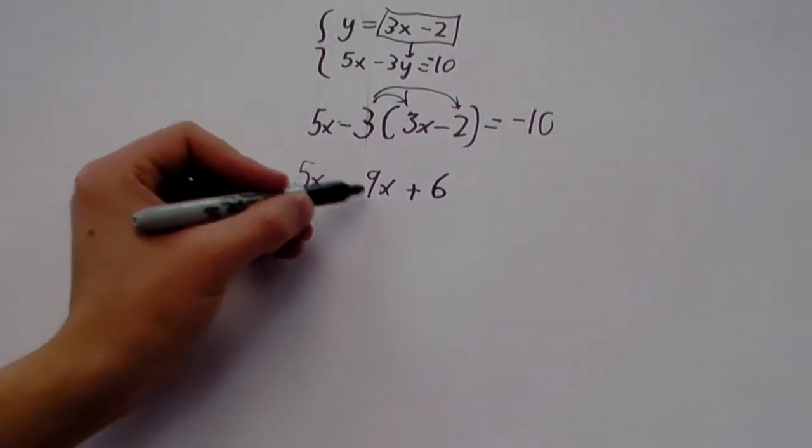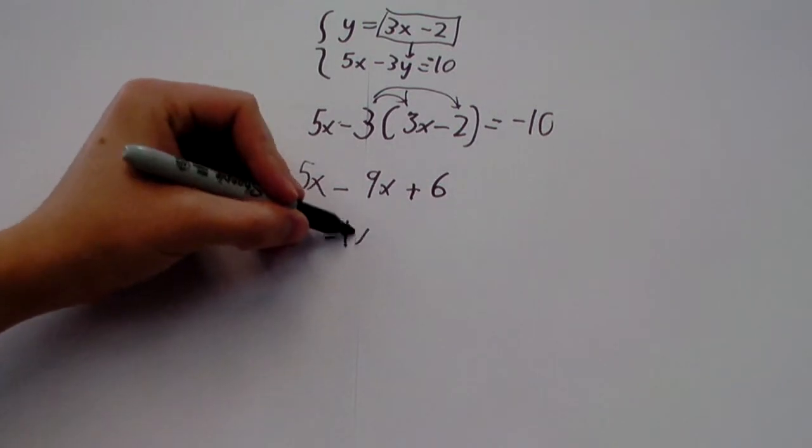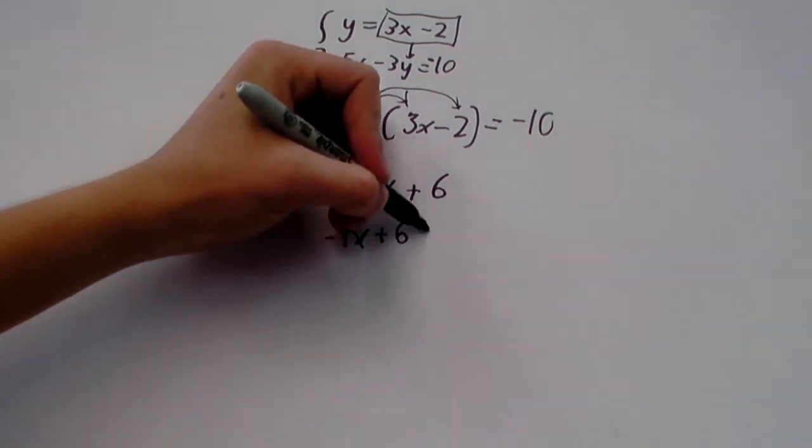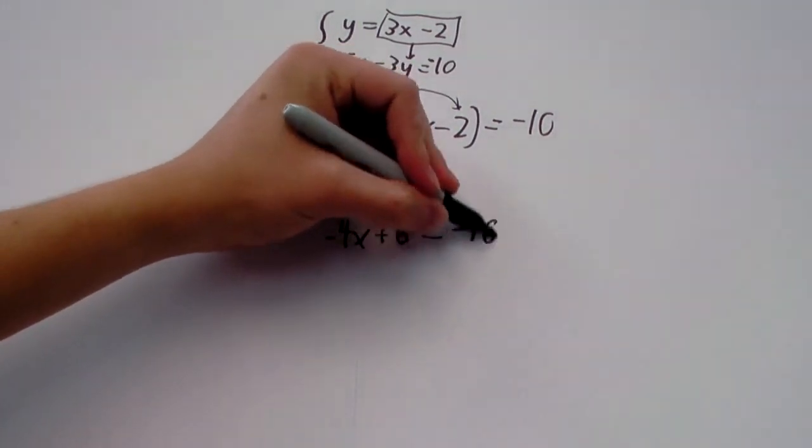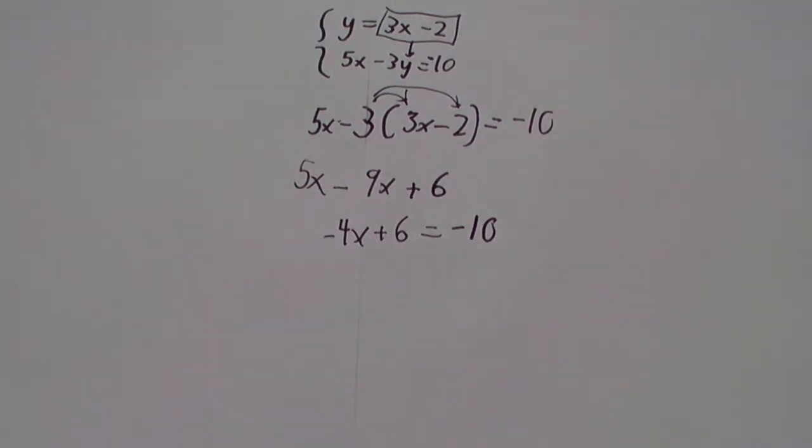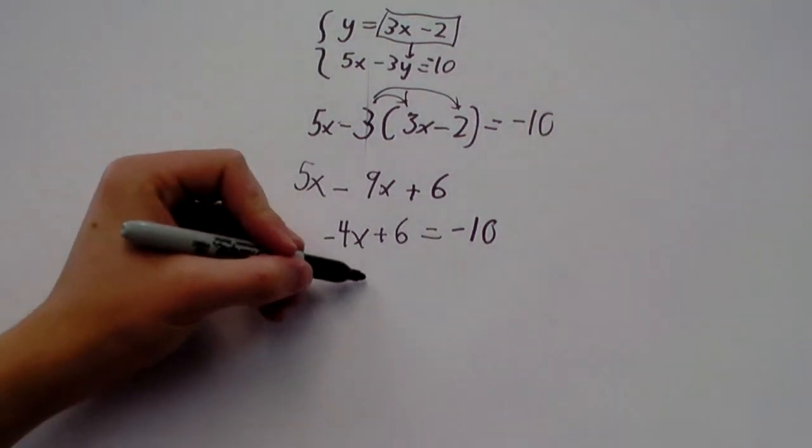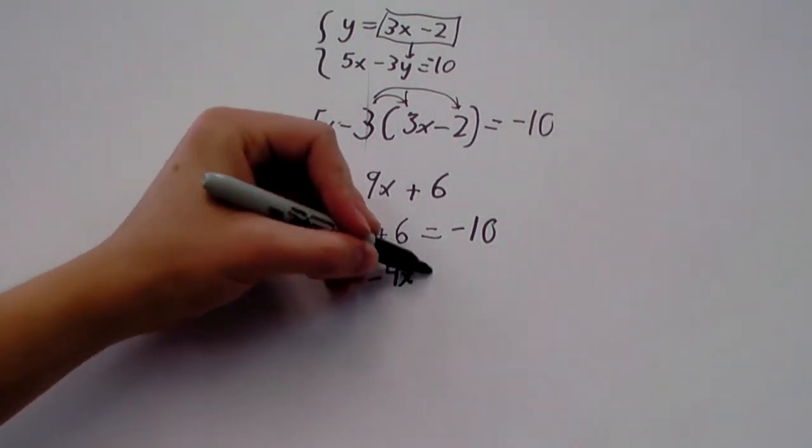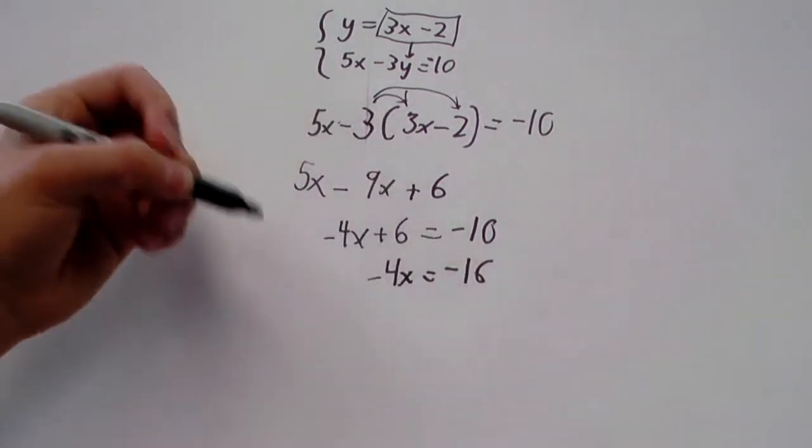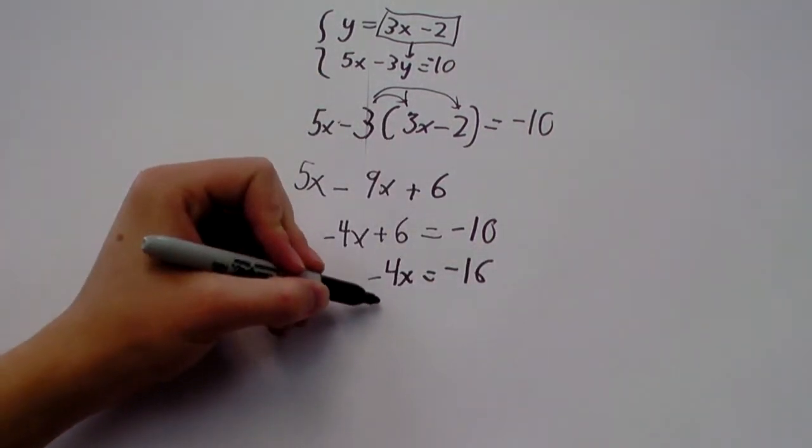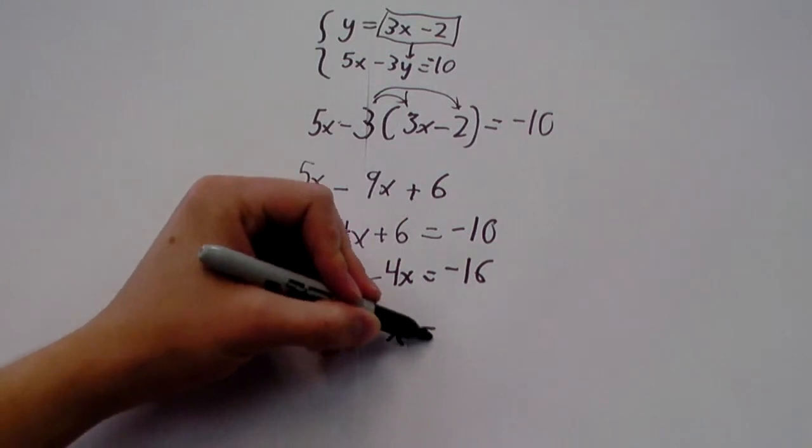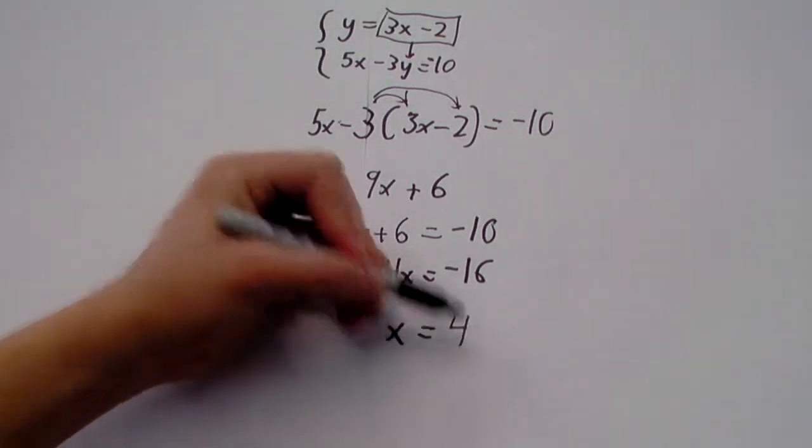And we've got 5x minus 9x is negative 4x plus 6 equals negative 10. Now we can just subtract 6 from both sides, giving us negative 4x equals negative 16. Divide both sides by negative 4, and we get x equals positive 4.